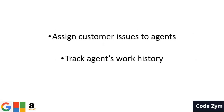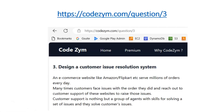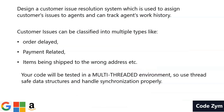Our customer issue resolution system should assign customer issues to agents who will resolve those issues. We will see the exact methods as we go along. There are a few important things: it defines what a customer issue resolution system does and the types of issues, which we already discussed. An important thing is that our code will be tested in a multi-threaded environment.